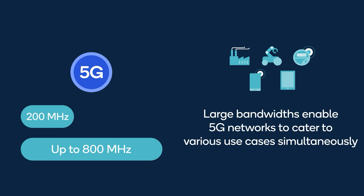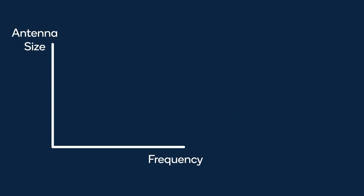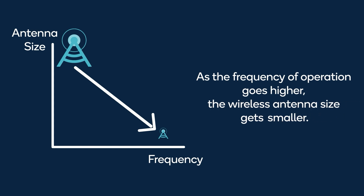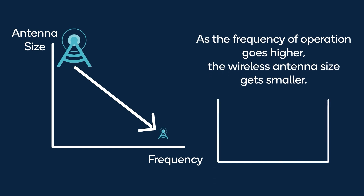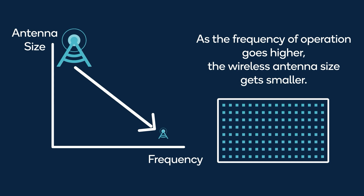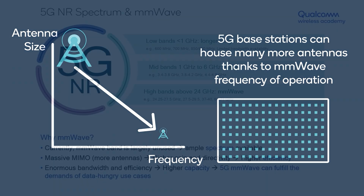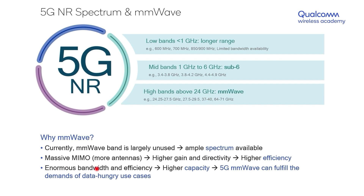Another benefit of 5G millimeter wave relates to radio propagation. As the operating frequency of a wireless signal increases, the size of the antenna required to process that signal decreases — they are inversely proportional. At significantly high frequencies such as millimeter wave, the antenna size is so small that cell towers can easily fit 100, 200, or even 500 antennas in a comparatively small physical space. This leads to a paradigm known as massive MIMO.